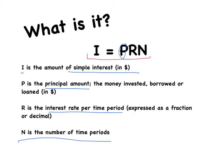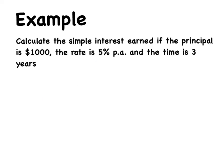Let's have a look at an example. Calculate the simple interest earned if the principal is $1,000, the rate is 5% per annum and the time is 3 years. Now, where did that phrase 'per annum' come from? It's abbreviated P.A. When looking at interest, particularly with simple interest, we see P.A. and it means per annum. You'll want to note that per annum means per year.